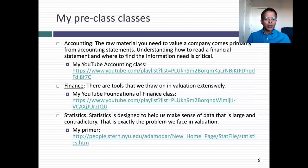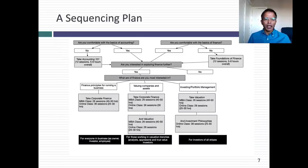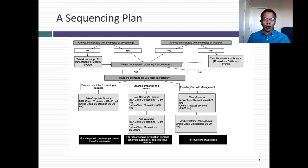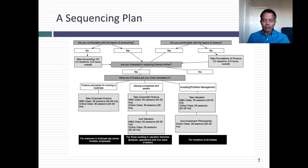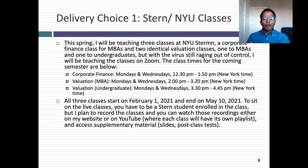As you look at these choices, you're probably asking where do I start. I put together a sequencing plan about nine months ago. It starts by asking: are you comfortable with the basics of accounting and the basics of finance? If you are, you can skip the pre-classes. If you're not, take the pre-classes. Then the question is what are you most interested in? If you're interested in running a business, the corporate finance class fits you. If you're interested in valuing companies and assets, the valuation class fits you — though I'd suggest taking corporate finance first. Or if you're interested in investing and portfolio management, the philosophies class might fit you.